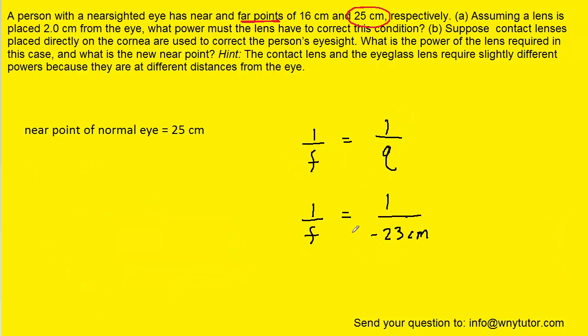Solving for F is a relatively simple matter. We could just cross multiply, and we would have F times 1, so that's just F, and then negative 23 times 1 gives us negative 23 centimeters. This would be the focal length of this lens that's needed to correct for this person's vision.